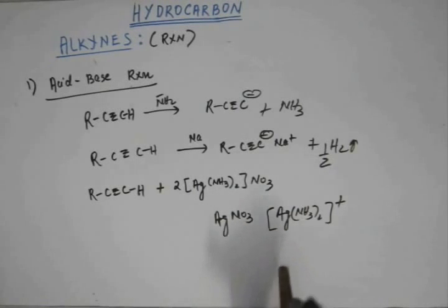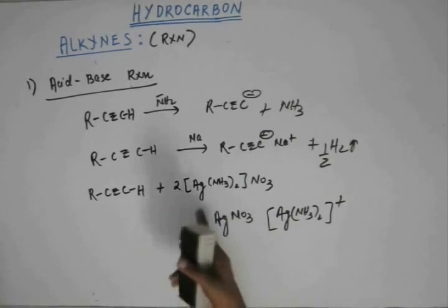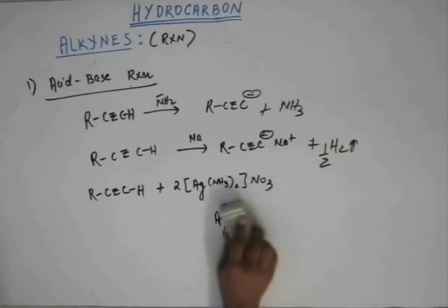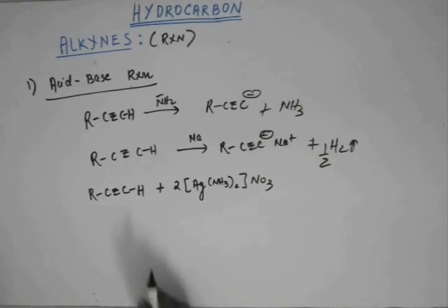So this complex is quickly formed whenever we have ammonia and we have silver. So this is when you add ammonia to silver nitrate—that is called ammoniacal silver nitrate, and this is how it exists in the complex form. So when you add ammoniacal silver nitrate to this terminal alkyne, the reaction that you get is: